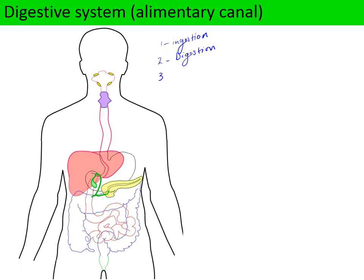The third job after digestion occurs in the ileum is absorption of the breakdown products. We absorb amino acids, fatty acids and glycerol, sugars, and mineral ions into the bloodstream across the small intestine. The fourth process is egestion, where we egest as faeces anything we can't break down. We do not make cellulases, so we cannot break down cellulose in plant material, and we don't have mutualistic bacteria like cows or rabbits do. So the cellulose passes through and becomes part of the egested fibre material.